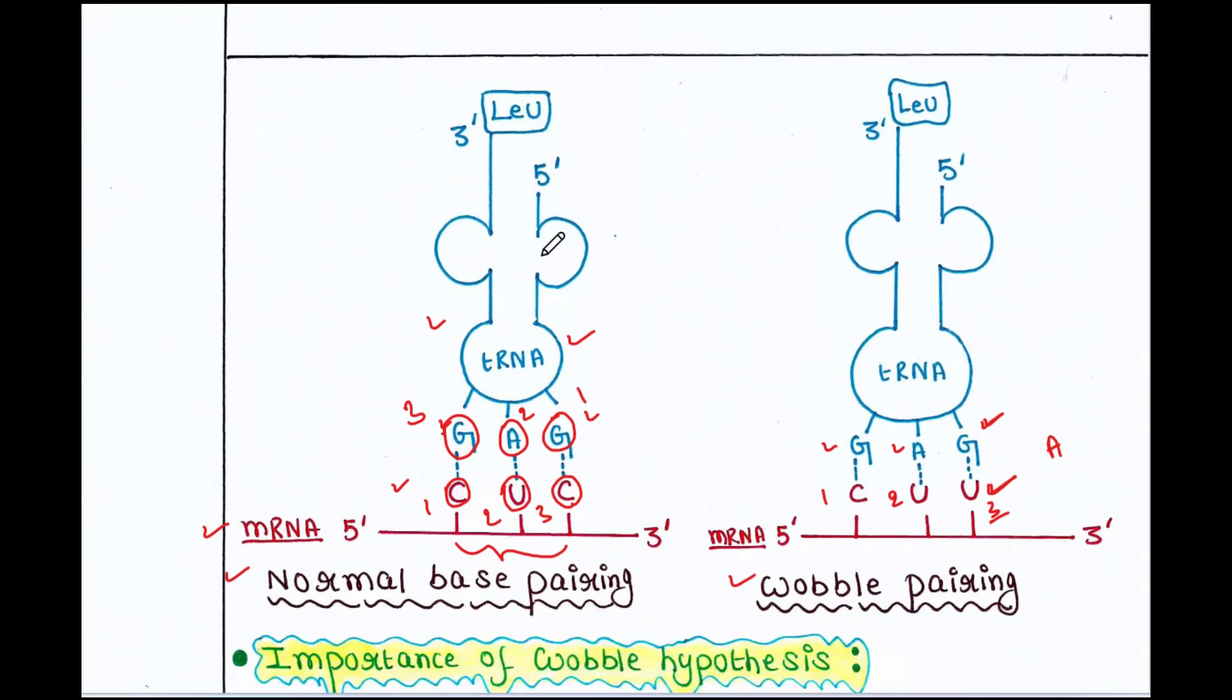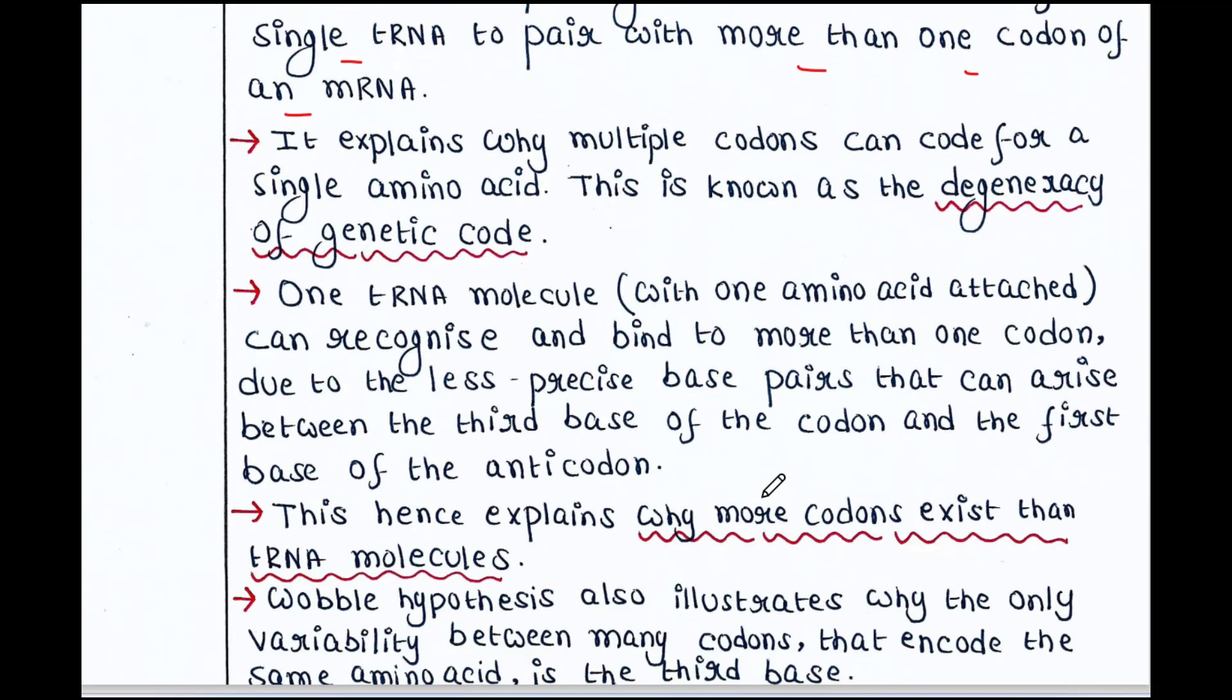So, this tRNA, it has one single amino acid attached with it that is leucine. And it is interacting with two different codons. This hence explains why more codons exist than tRNA molecules. Wobble hypothesis also illustrates why the only variability between many codons that encode the same amino acid is the third base.